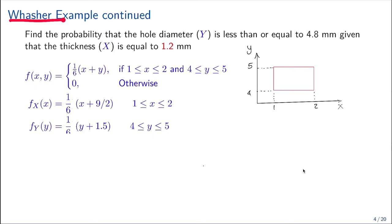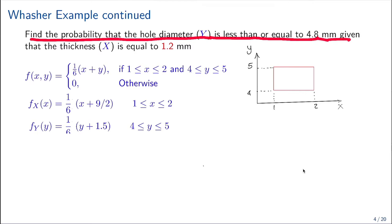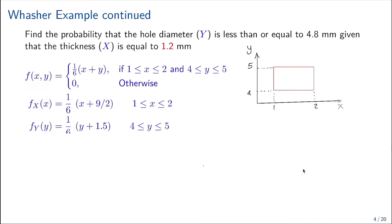Let's consider the washer example. The question is: find the probability that the hole diameter y is less than or equal to 4.8 millimeters given that the thickness x is equal to 1.2 millimeters. Let's recall the three density functions: f(x, y) the joint density function, f(x), and f(y) the marginal distributions. The domain is x between 1 and 2, and y between 4 and 5.